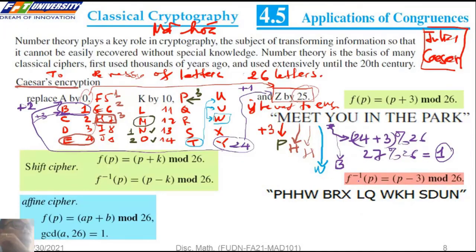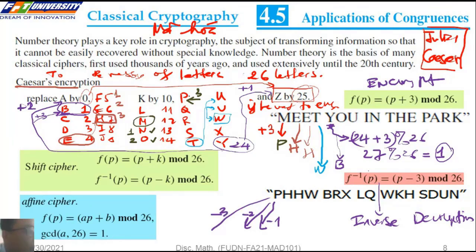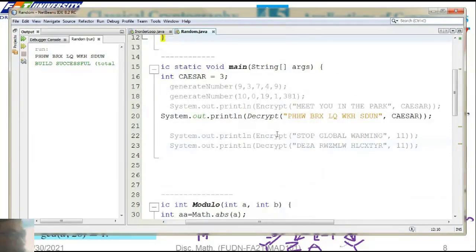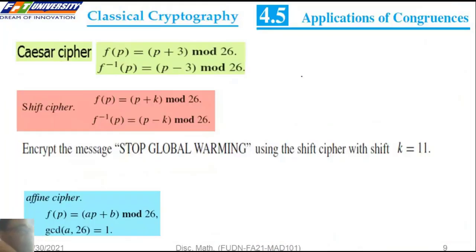To recover the original message, we apply the inverse function. For decryption, we shift back. For B (index 1), subtracting 3 gives index 24 minus wrapping: B minus 3 gives Y. This is shown for demo: we can decrypt a message using the Caesar cipher. The result is the original message.